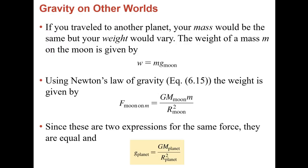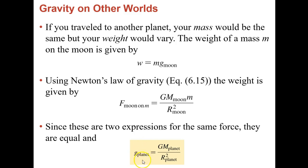If you traveled to another planet, your mass would be the same but your weight would vary. Mass is the amount of material in an object; weight is the force acting on it. Using F = G × M × m / r², and recognizing that weight equals mass times g, the mass of the person cancels out. The acceleration due to gravity on a planet is simply g = G × M_planet / R_planet². This is another important formula derivation you should be able to perform.